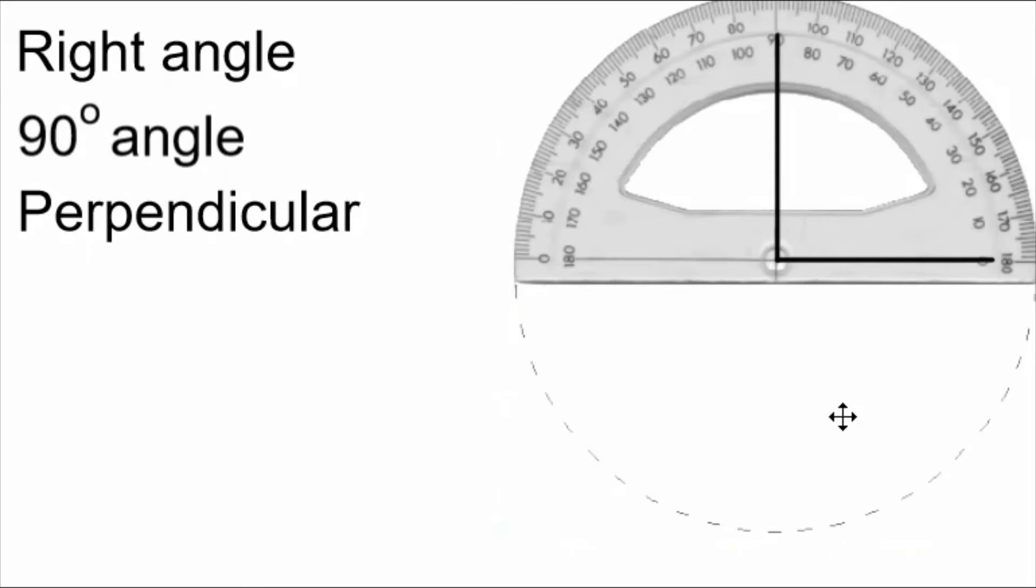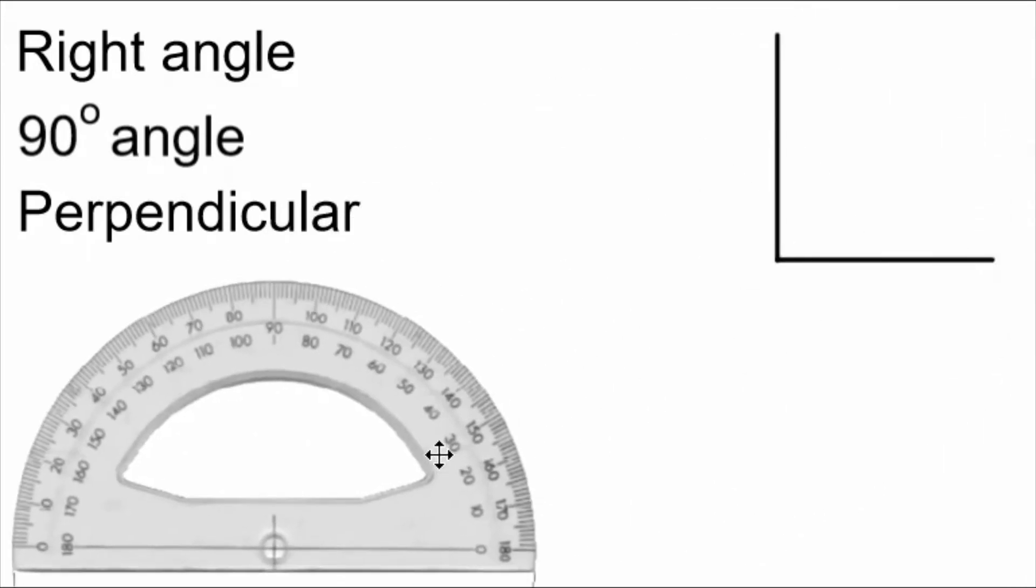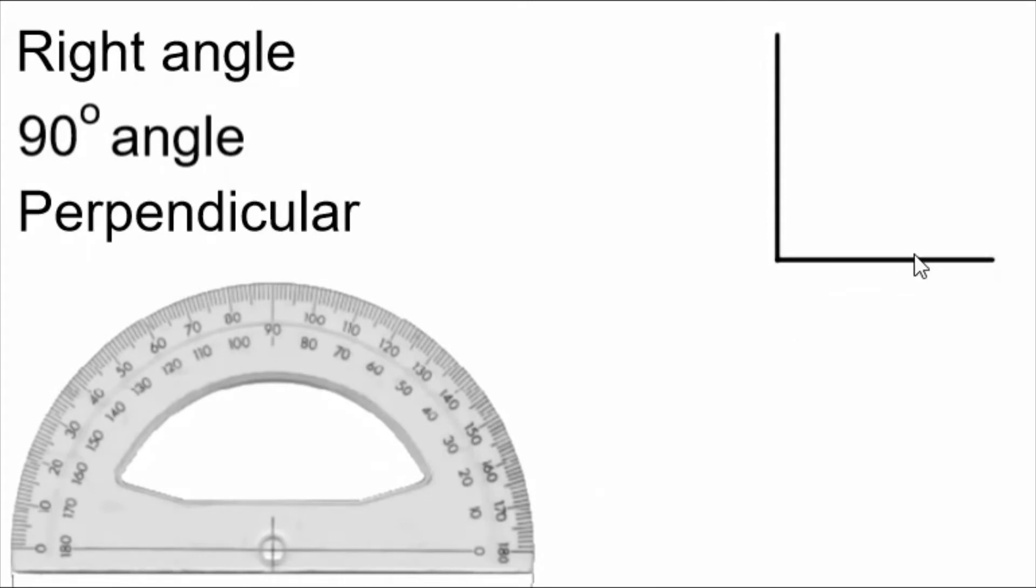There, that line is drawn at 90 degrees. I can move my protractor out of the way now. What I have just drawn is a 90 degree angle or a right angle, and we can use this symbol that looks like a square to show that this is a right angle. Or if we want, we can write 90 degrees in here and it means the same thing.